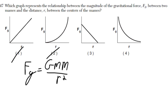We're down to three and four, and we need to figure out which one it's going to be. Number three indicates an inverse relationship. Four indicates an inverse square relationship.